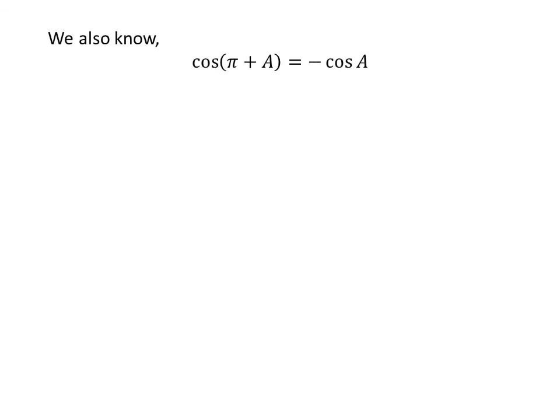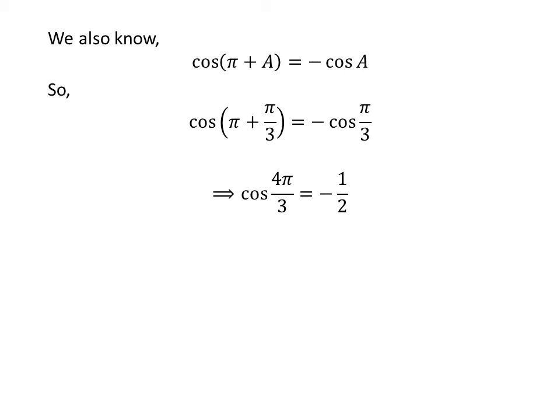We also know the trigonometric identity cosine of pi plus a is equal to minus cosine of a. The proof of this identity is given in the video appearing in the upper right corner, and the link is also in the description. Applying this identity gives us cosine of 4 times pi upon 3 is equal to minus half.